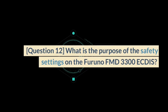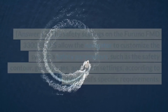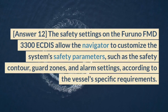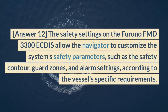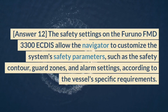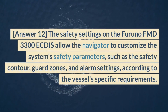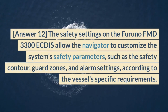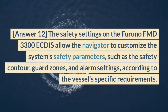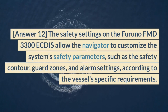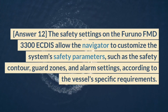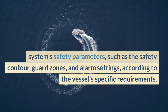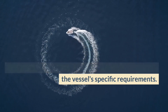Question 12. What is the purpose of the safety settings on the Furuno FMD 3300 ECDIS? Answer 12. The safety settings allow the navigator to customize the system's safety parameters, such as the safety contour, guard zones, and alarm settings, according to the vessel's specific requirements.